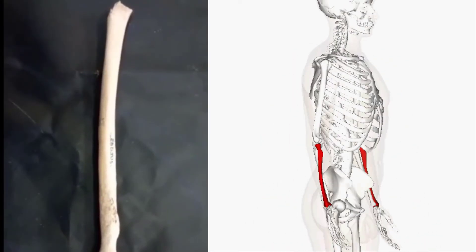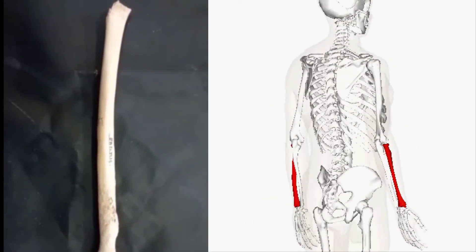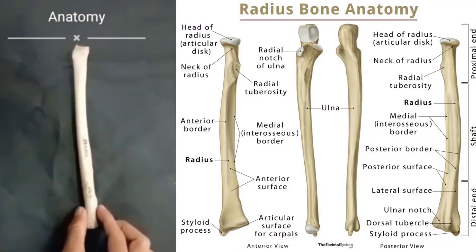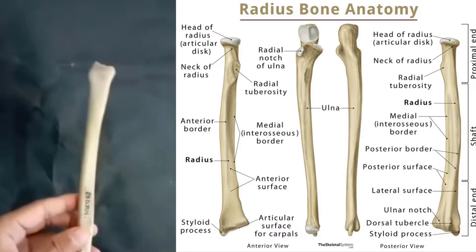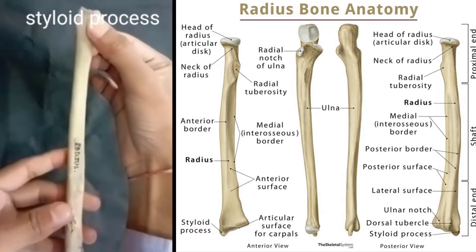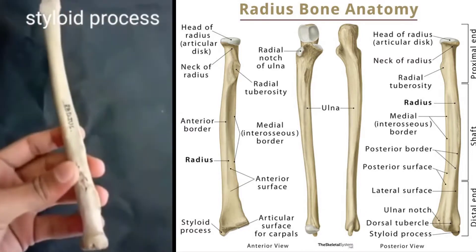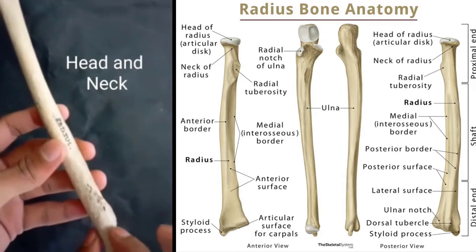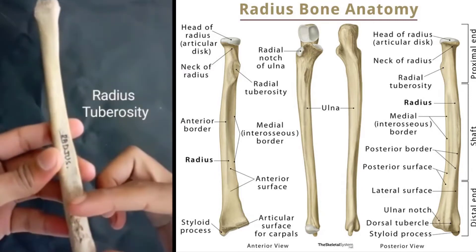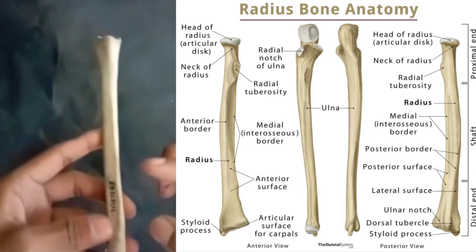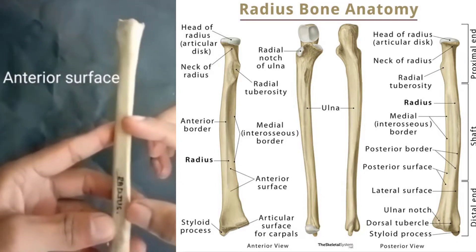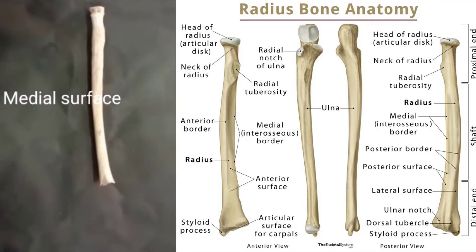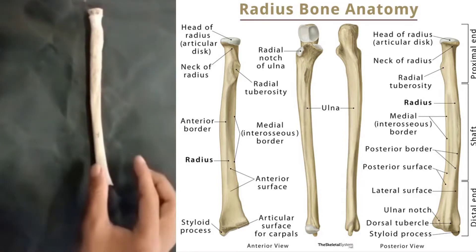In this video we will discuss the radius, starting with its anatomy. This is the styloid process of the radius, this is the head of the radius, this is the neck of the radius, and this is the radial tuberosity. This is the anterior surface of the radius and this is the medial surface.